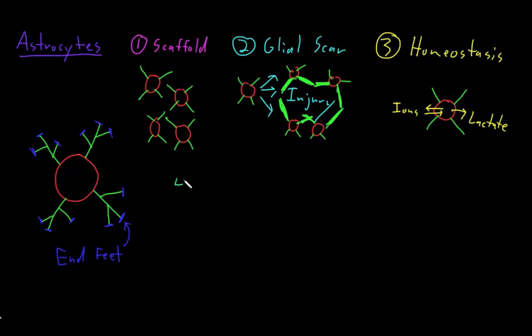Another function of astrocytes is contributing to something we call the blood-brain barrier. And this is a barrier that prevents large molecules in the bloodstream. So I'll just draw a little blood vessel passing through the central nervous system. And this prevents large molecules from leaving the blood to enter the central nervous system, unless the cells actually want that large molecule to enter.